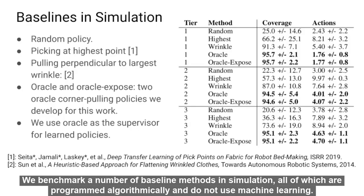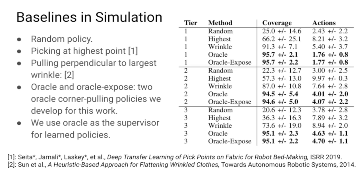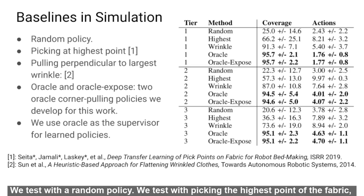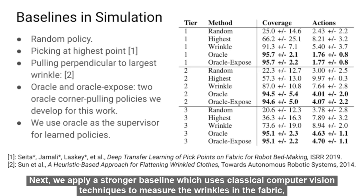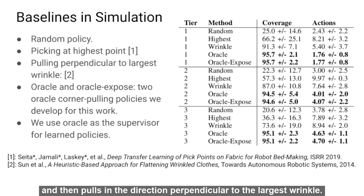We benchmark a number of baseline methods in simulation, all of which are programmed algorithmically and do not use machine learning. We test with a random policy. We test with picking the highest point of the fabric, or the vertex with the highest z coordinate, because that proved to be a reasonably strong baseline from prior work. Next, we apply a stronger baseline which uses classical computer vision techniques to measure the wrinkles in the fabric and then pulls in a direction perpendicular to the largest wrinkles.